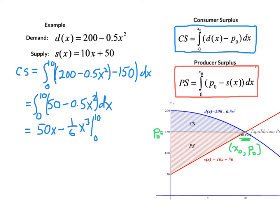Then we can evaluate that. On the upper bound 10 we have 500 - 1000/6. On our lower bound that gives us 0. If we combine those, we end up with 3000/6 - 1000/6, so 2000 divided by 6 is our consumer surplus, which if we're working in American dollars gives us a consumer surplus of $333.33.